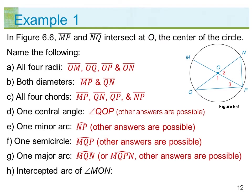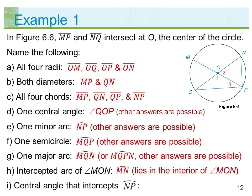H) Intercepted arc of angle MON: arc MN, which lies in the interior of angle MON. I) Central angle that intercepts arc NP: angle NOP.